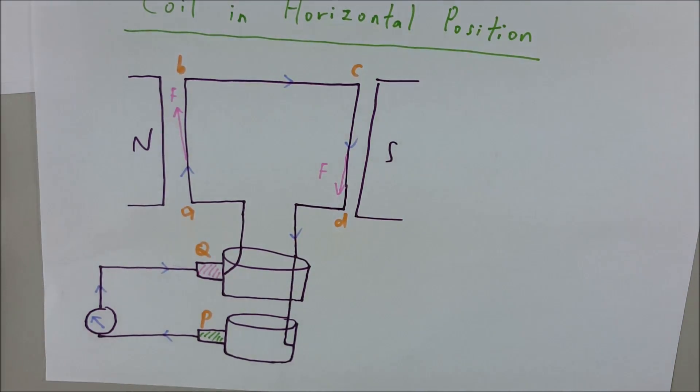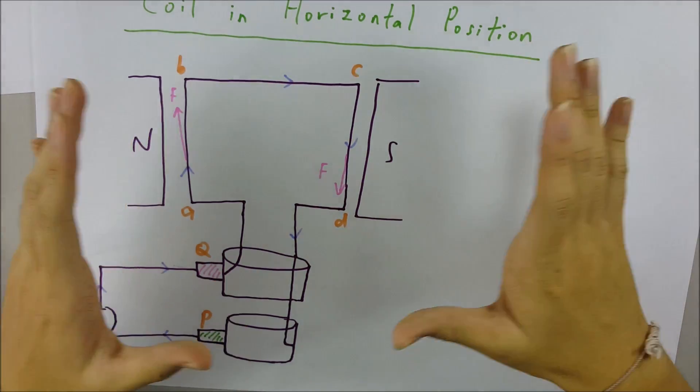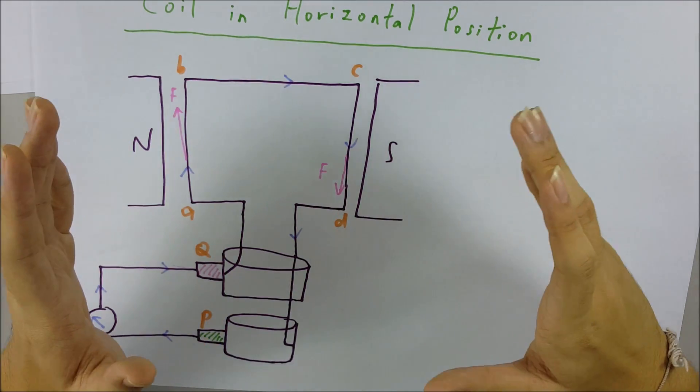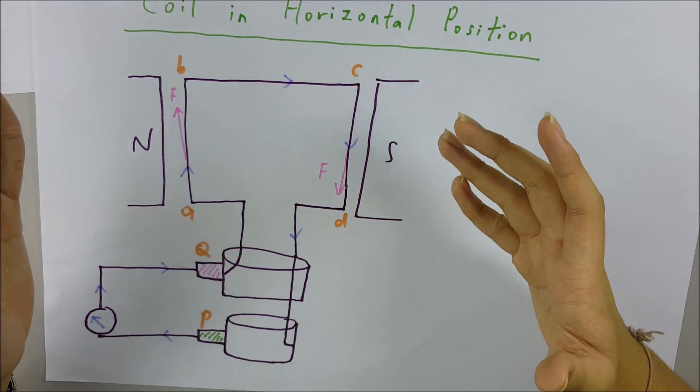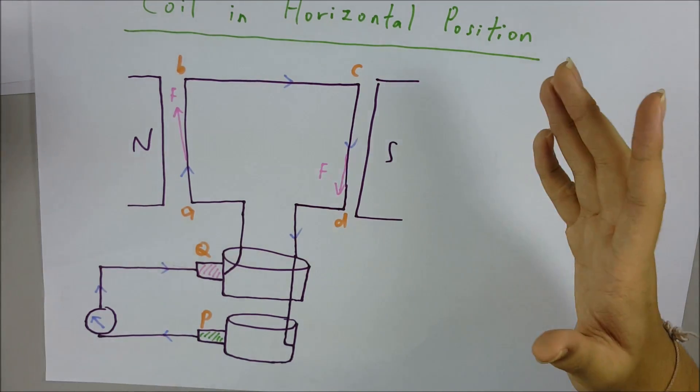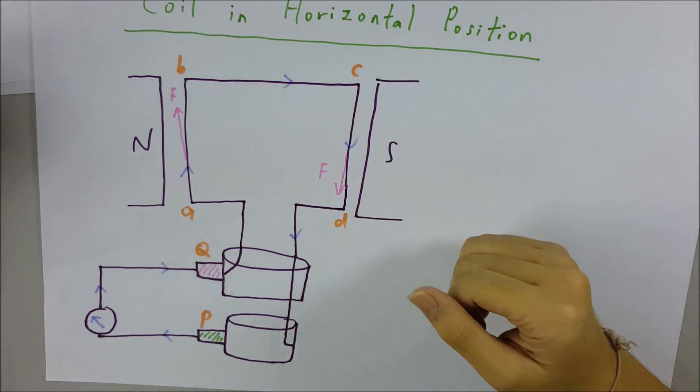After this position, the current decreases because the coil now is in the horizontal position, but as it turns, the coil goes to the vertical position. The sides AB and CD move in parallel with the magnetic field lines.